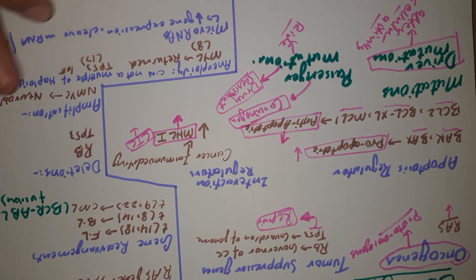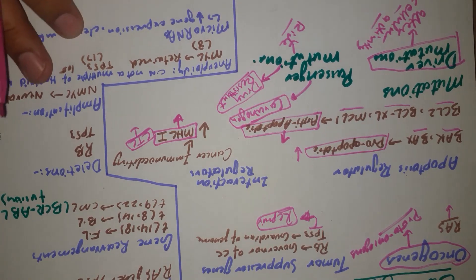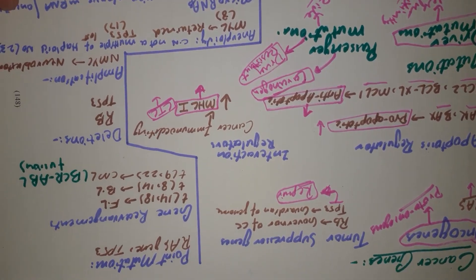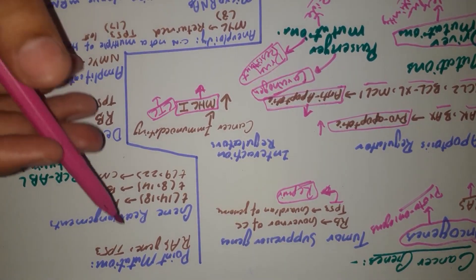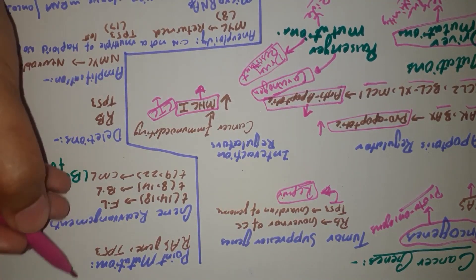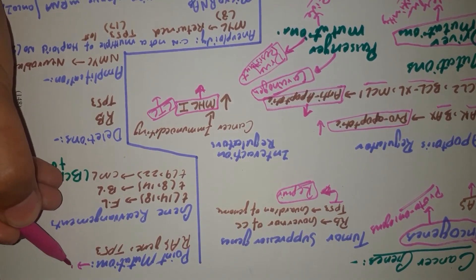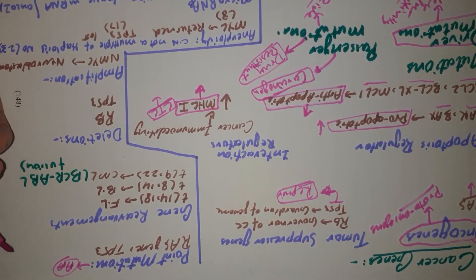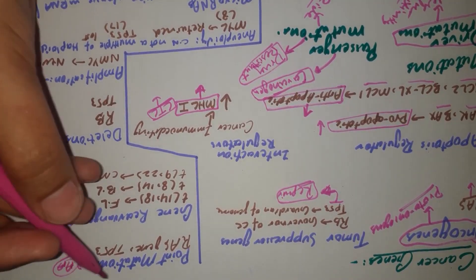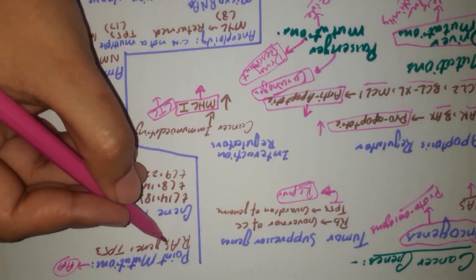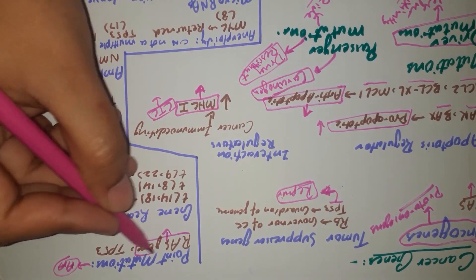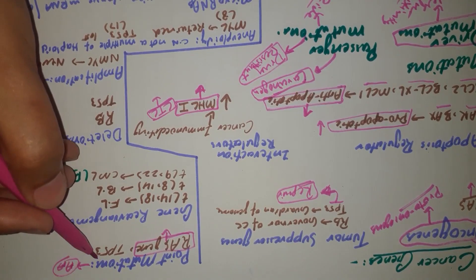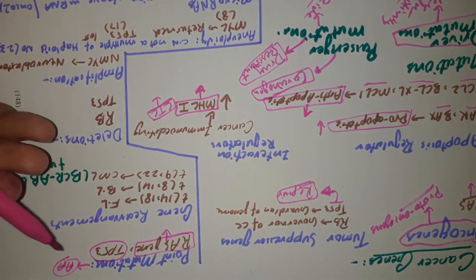Different mutations may occur in the genome or DNA sequences which can lead to carcinogenesis. They can be grouped into different types. Point mutation is basically a mutation in a single amino acid — a single amino acid may be replaced by another. Point mutations are involved in the amplification or overactivity of the RAS pathway, making the tumor self-sufficient of growth signals, or they can lead to the inactivation of the TP53 pathway.